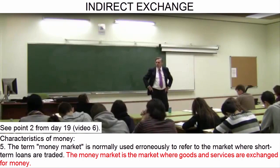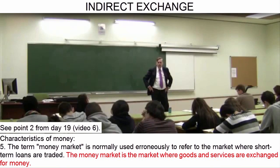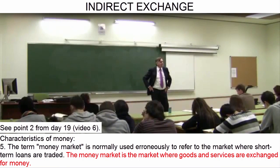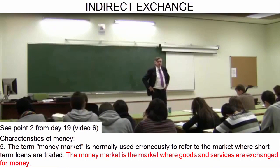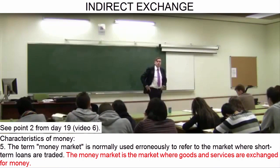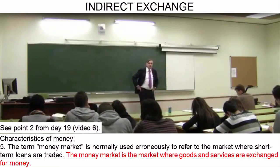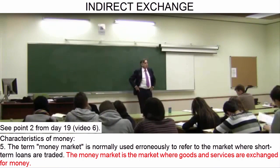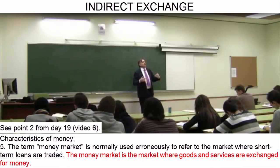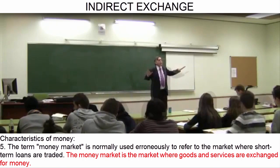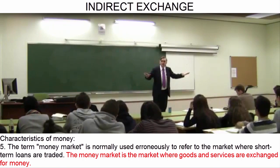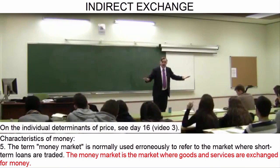It is the market in which money is supplied and demanded, and a price for money is determined. The price of money is its purchasing power — what can be purchased with a monetary unit. That is the money market, and it is very important.